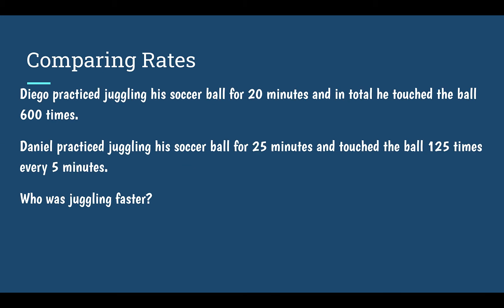Let's look at an example comparing two rates. We need to figure out what the question is asking, and how we approach it will depend on what we need to find out. Diego practiced juggling his soccer ball for 20 minutes and in total touched the ball 600 times. Daniel practiced juggling his soccer ball for 25 minutes and touched the ball 125 times every five minutes.